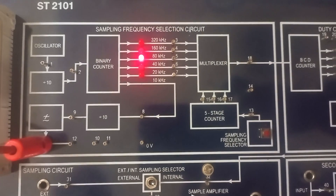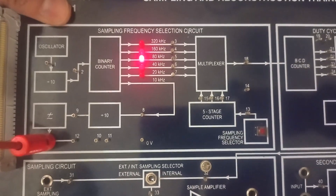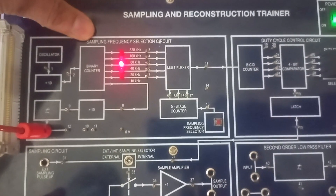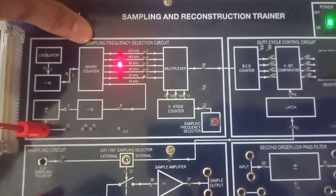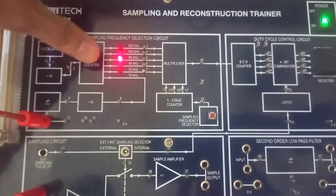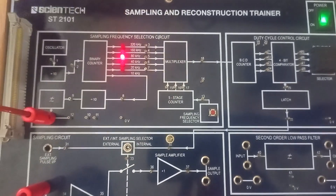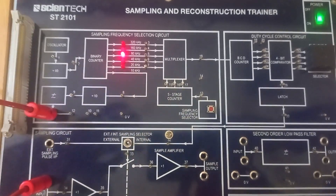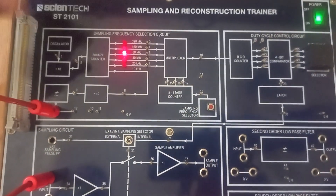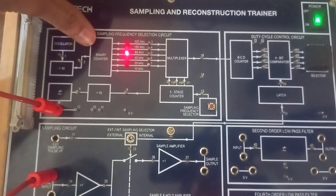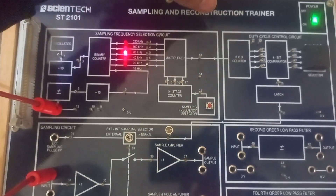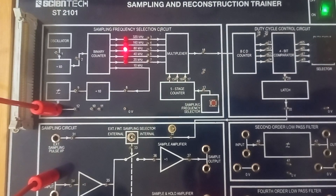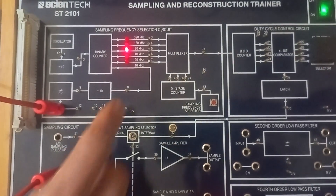The minimum sampling rate is determined by the Nyquist sampling theorem, as you have studied in theory. Note that this circuit also determines the input signal. Sampling requires two types of signals: one is the input signal, and another is the sampling pulse. Here we see how the message signal is generated.